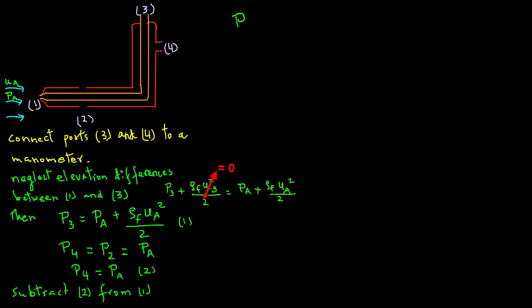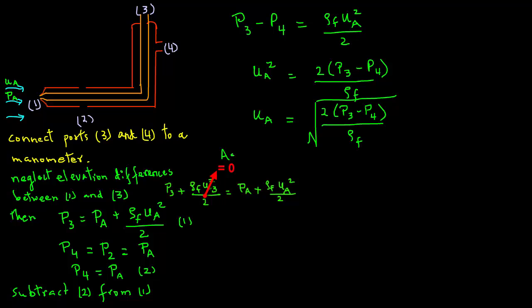We have P3 minus P4 equals rho F UA squared divided by 2. The pressure PA terms cancel out due to subtraction. Now we can rearrange this equation in terms of velocity. UA squared equals 2 times P3 minus P4 divided by rho F. Or taking the square root: UA equals square root of 2 times P3 minus P4 divided by rho F.